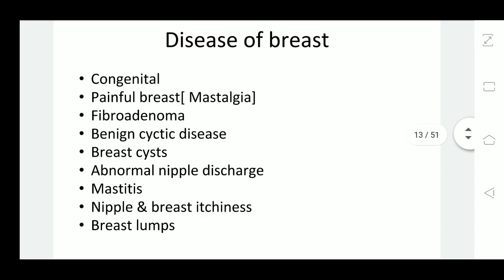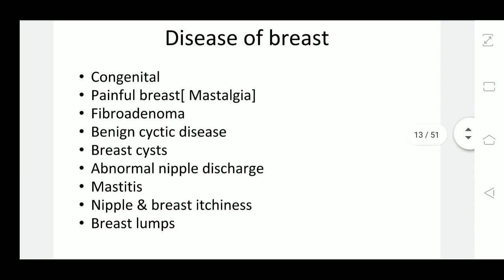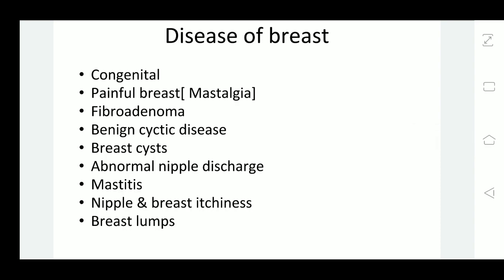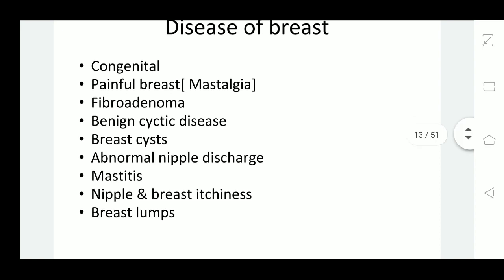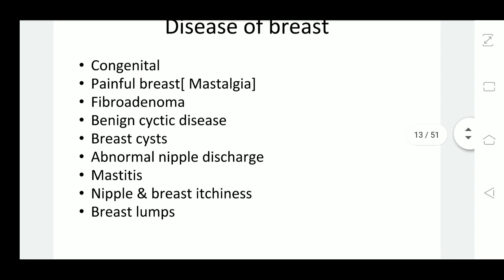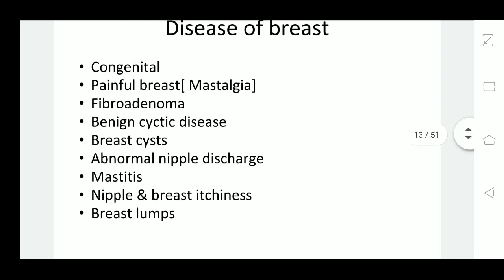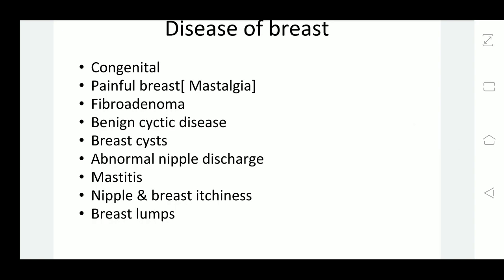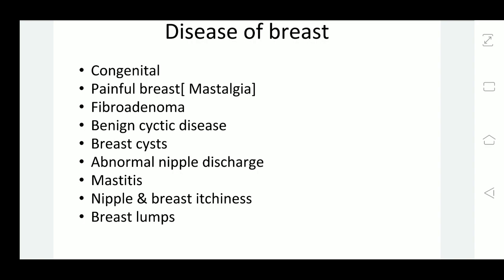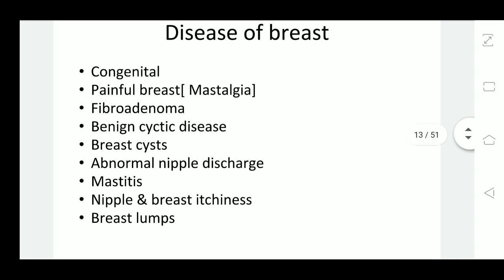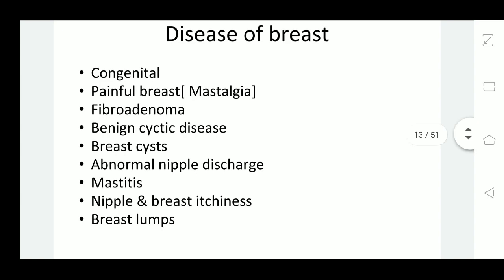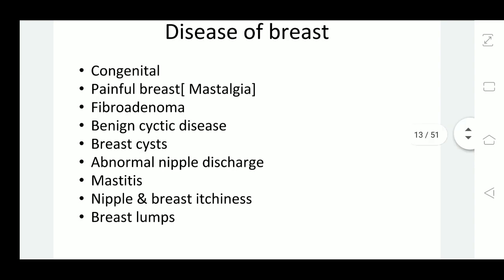There are various types of diseases of the breast which we will discuss. There are some congenital abnormalities of the breast. Sometimes there is mastalgia, or painful breast. Another disease of the breast is fibroadenoma. There is also benign cystic disease and breast cysts. Abnormal nipple discharge is another complaint. There may also be a diagnosis of mastitis, nipple and breast itchiness, and breast lump.